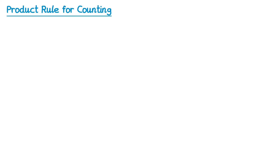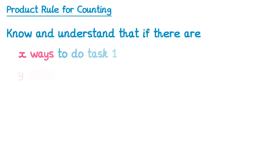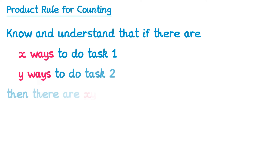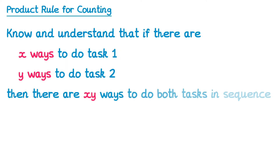In this video we're going to learn about the product rule for counting. As always, there are exam questions in this video's description that you can try on this topic afterwards. The specification says that you need to know and understand that if there are x ways to do task 1 and y ways to do task 2, then there are xy ways to do both tasks in sequence. The reason this is called the product rule is because you multiply x and y together to get xy.